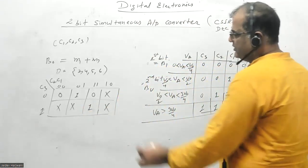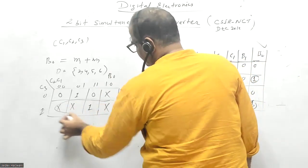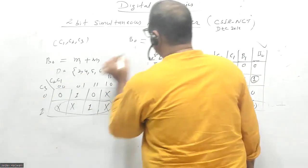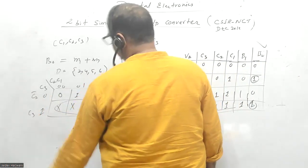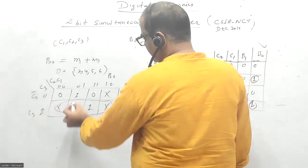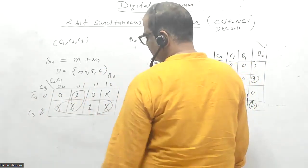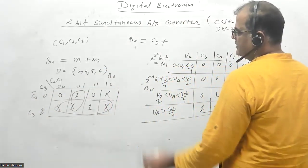I want to solve for b0, so b0 will be: I can make one group here. This is C3, this is C3 bar, so one group I can make like this. This is 0, 1 with C3 changing, which means C3 bar is common.